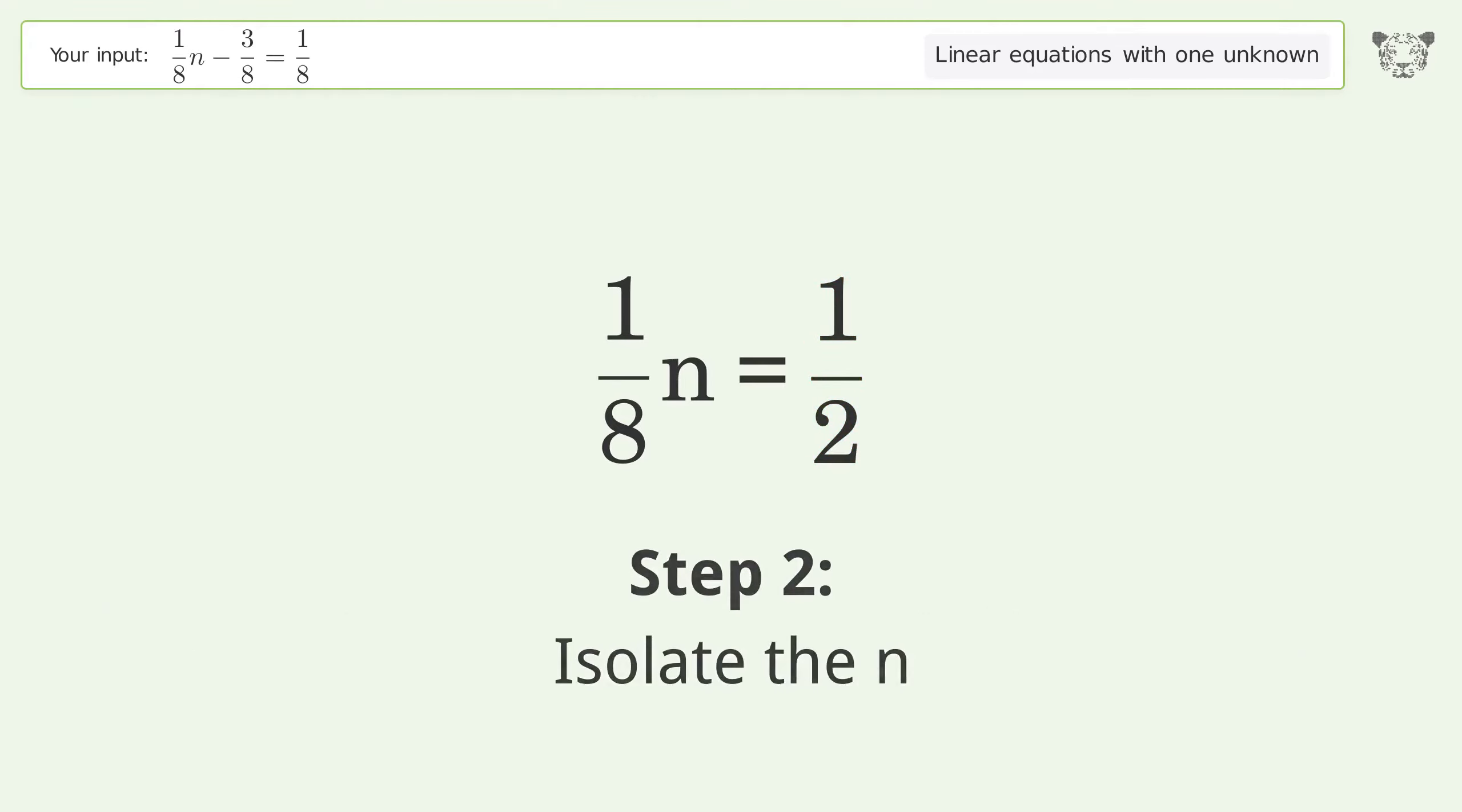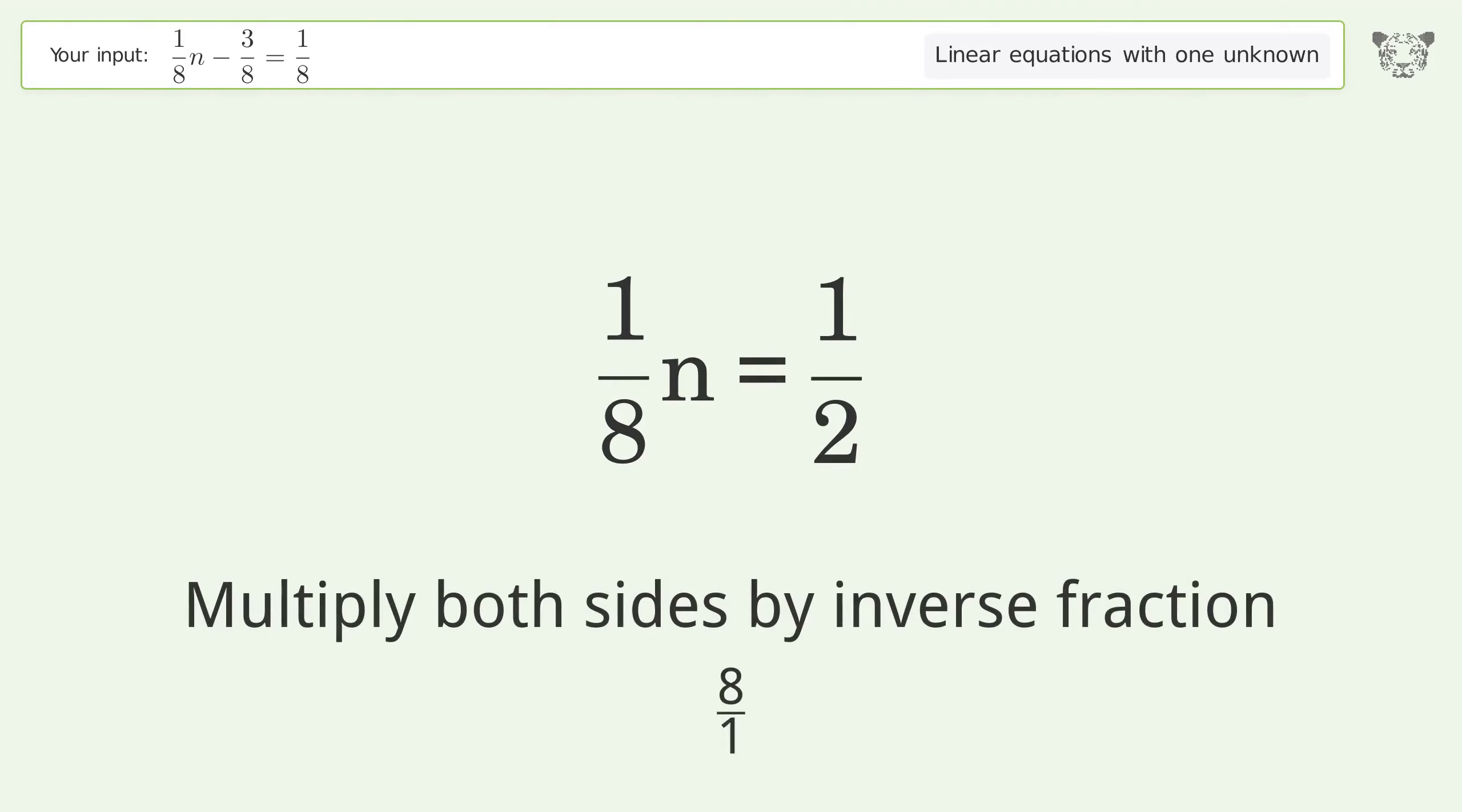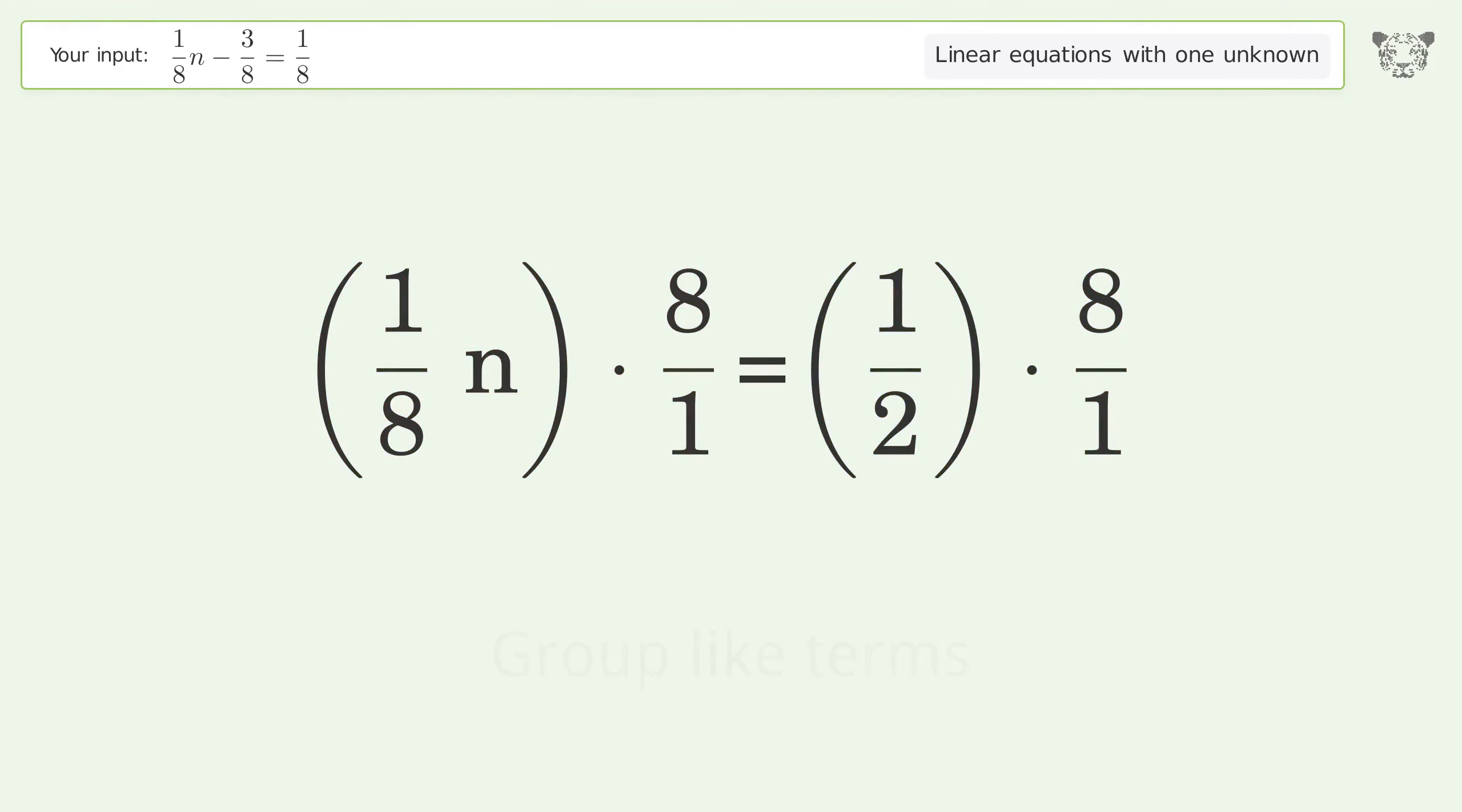Isolate the n. Multiply both sides by inverse fraction 8 over 1. Group like terms.